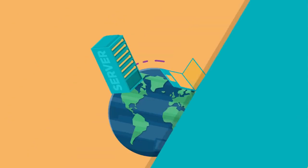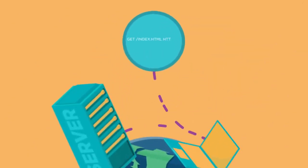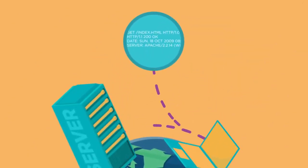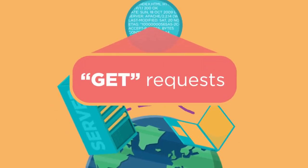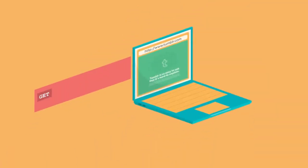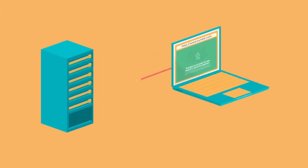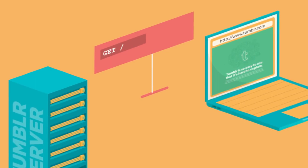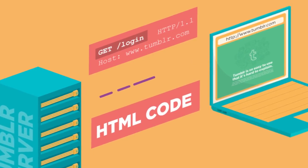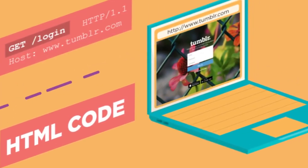It's actually really pretty straightforward. If you were to intercept the conversation between your computer and a web server on the internet, it's mainly made up of something called GET requests. Those are simply the word GET and then the name of the document you're requesting. So if you're trying to log in to Tumblr and load the login page, all you're doing is sending a GET request to Tumblr's server that says: GET /login. That tells Tumblr's server that you want all of the HTML code for the Tumblr login page.